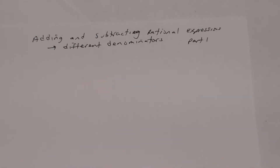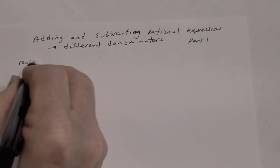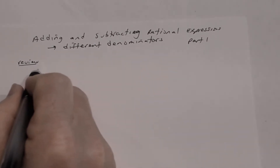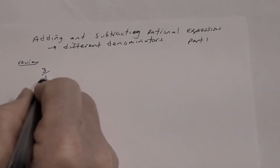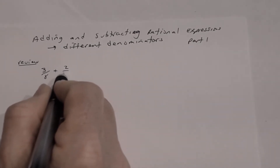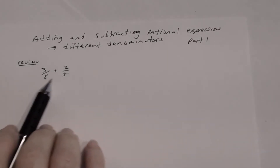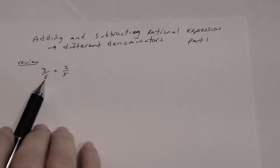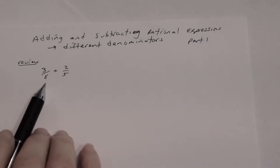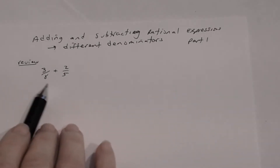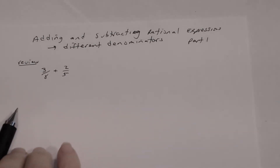As a review, let's go back to adding two rational numbers. Let's say we want to add 3/8 plus 2/5. In order to add fractions, you have to have the same denominator. Since the denominators are different, you have to find the least common denominator — the least common multiple of the denominators. The least common denominator here is 40.